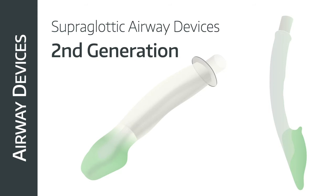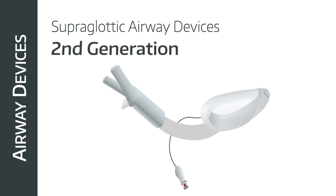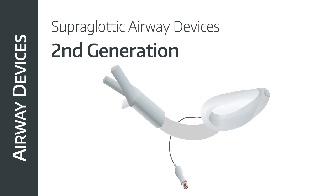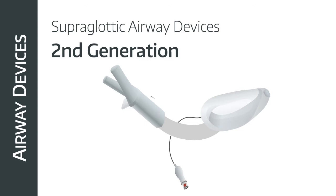Generally you can ventilate most adults on a size 4 (green), but many men will need a size 5 (orange). The LMA Supreme is another second generation device — the mask has a cuff inflated via a spring-loaded valve and pilot balloon, generating two seals: an oropharyngeal seal and an esophageal seal, designed to reduce the risk of gastric insufflation. Within the mask there are aperture fins to reduce the risk of epiglottis occlusion. Like the i-gel there's a gastric drain tube, but larger in the Supreme. There is also an integral bite block, but the Supreme's stem is rigid and preformed — it won't mold to the airway in the same way as the i-gel.